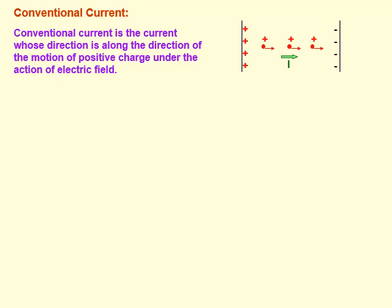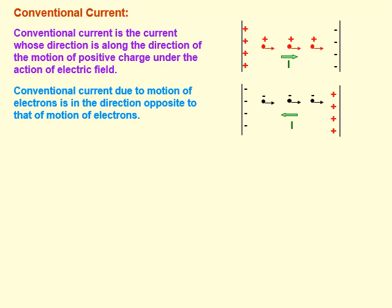The direction of current is from positive to negative terminal. The direction of the motion of positive charge is the direction of conventional current. It is just opposite to the motion of electrons. Electrons move from negative to positive terminal of battery, so the flow of conventional current is always from positive to negative terminal of battery — opposite to the direction of motion of electrons.